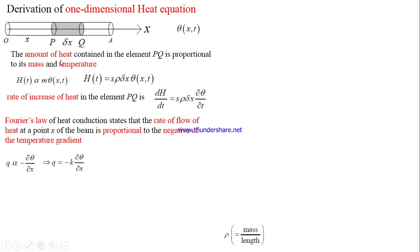If q1 is the rate of flow of heat into element PQ through point P, then q1 = −k·∂θ/∂x evaluated at P. If q2 is the rate of flow of heat out of element PQ at point Q, then q2 = −k·∂θ/∂x evaluated at Q.